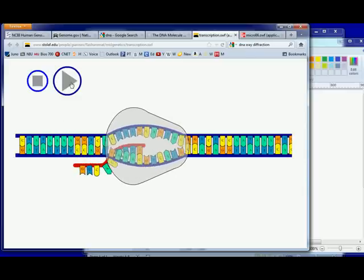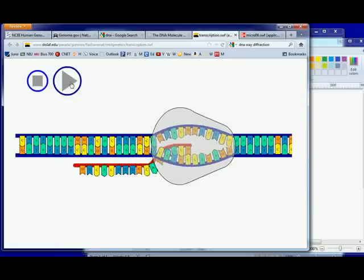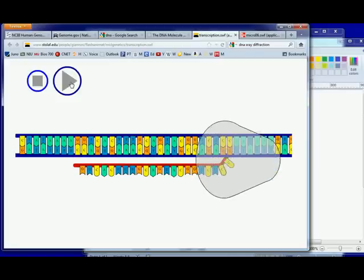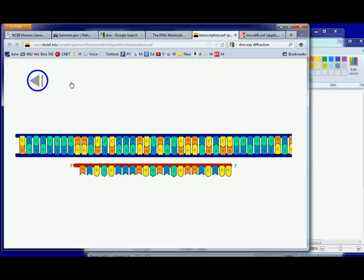Picking up where we left off, RNA is made during transcription. That is the copied code of DNA that can be taken out of the nucleus to the cytoplasm where the ribosomes are located, and that's where translation takes place.